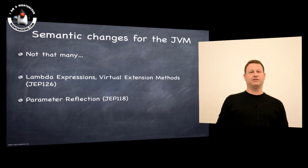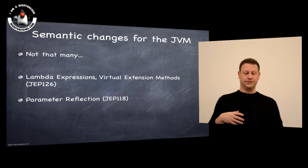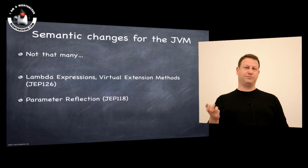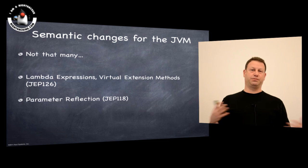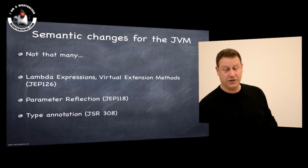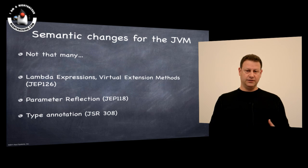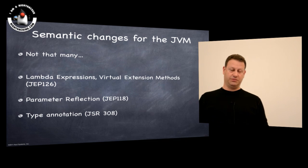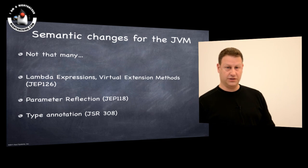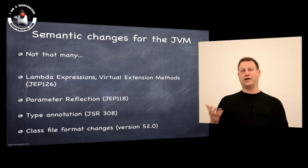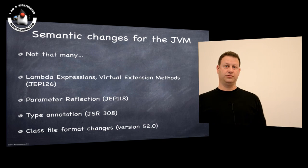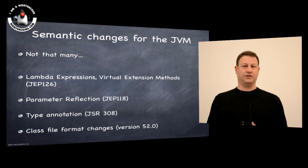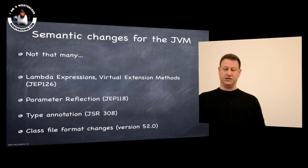Parameter reflection is one feature that Java 8 adds, where the ability to use reflection to determine the names of parameters to methods is a new feature. There's a type annotation JSR that's implemented in Java 8 that adds some significant abilities for annotating types and behaviors. All three of these things add a requirement for a new class format. The Java SE 8 class file format is updated to version 52, which is new. Java 7 was version 51.